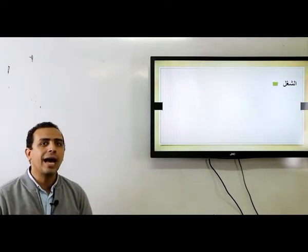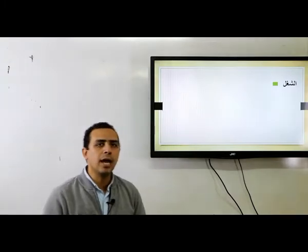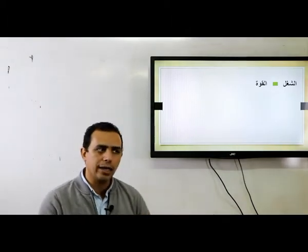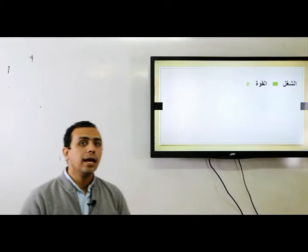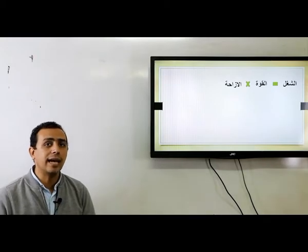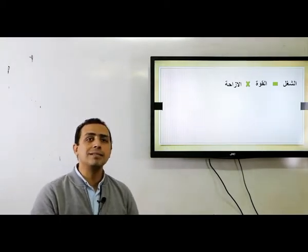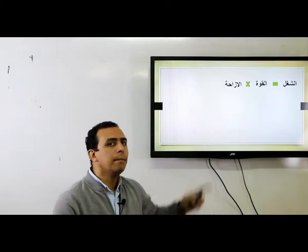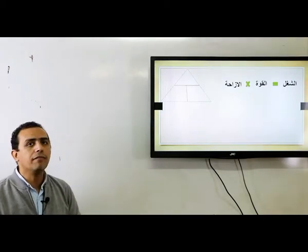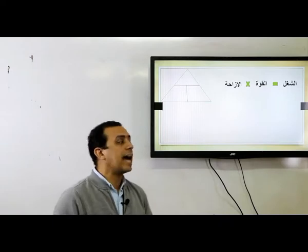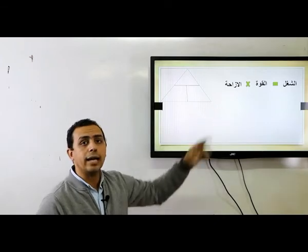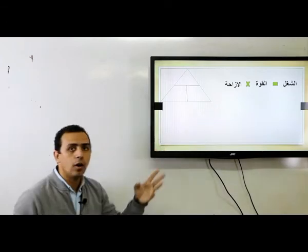فيه قانون للشغل — هنحسب الشغل ونعرف وحدات القياس. الشغل بيساوي القوة اللي هتؤثر بيها على الجسم في الإزاحة أو المسافة. الإزاحة هي المسافة بس الفرق إن الإزاحة بتبقى في خط مستقيم، يعني في اتجاه ثابت. يبقى: الشغل = القوة × الإزاحة.